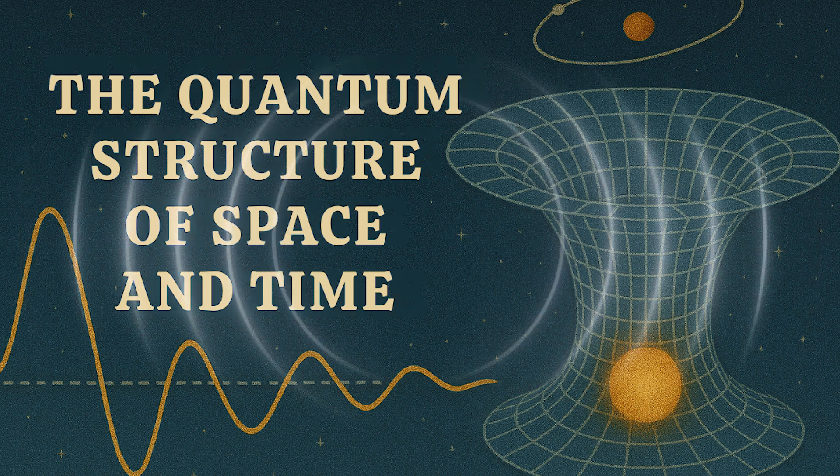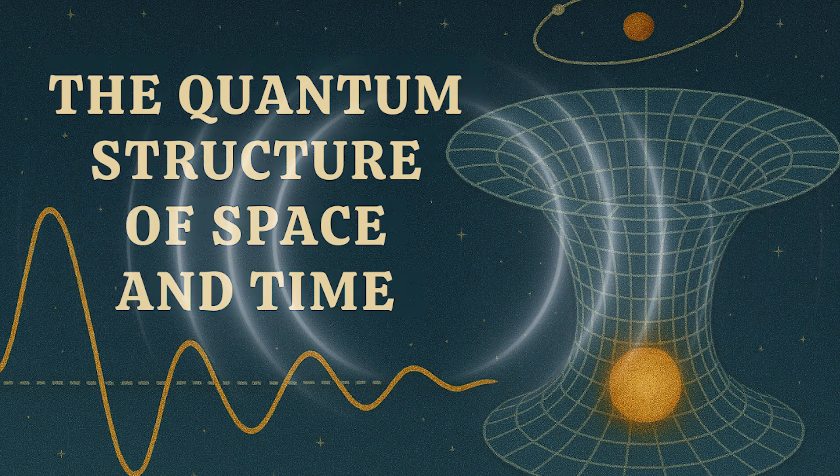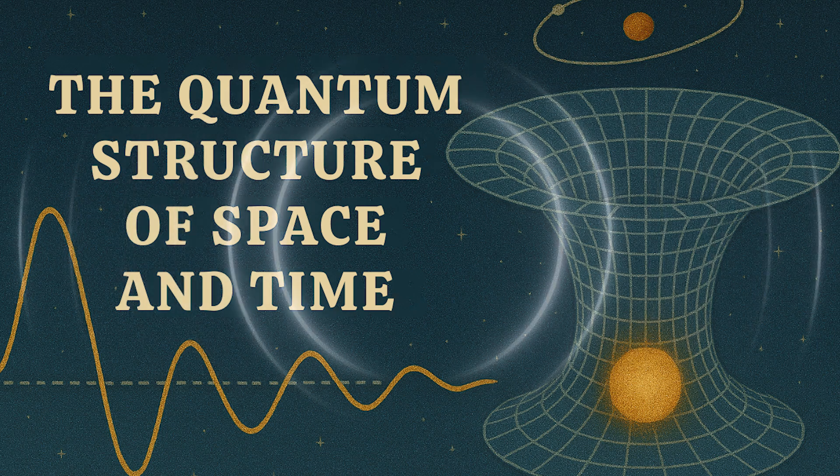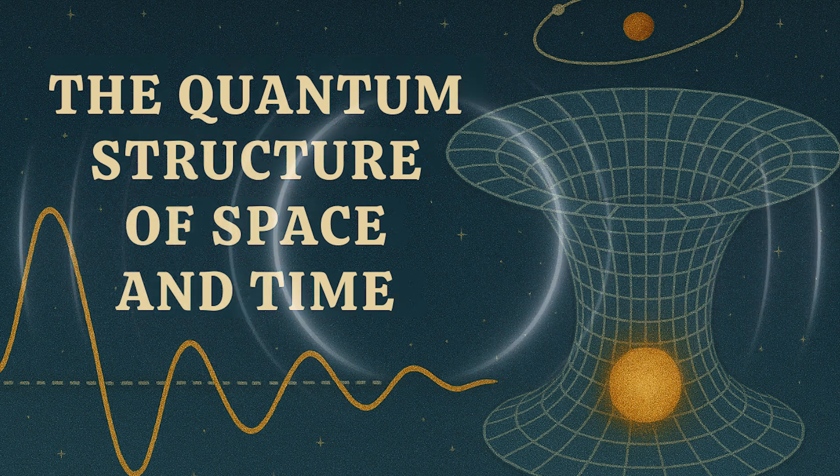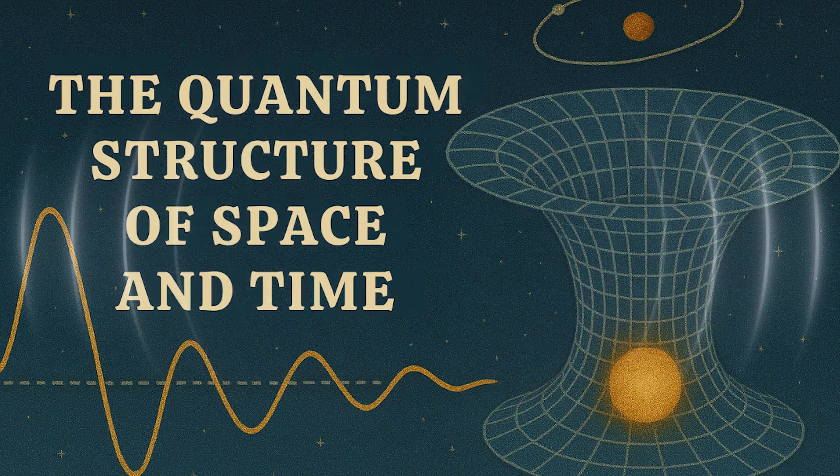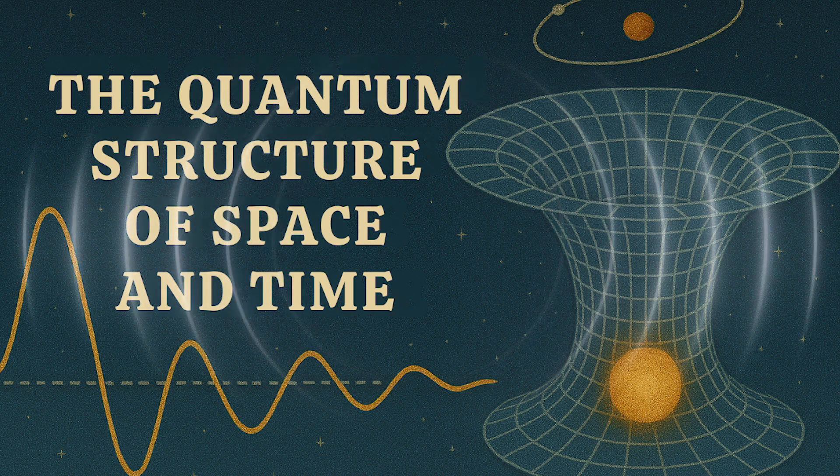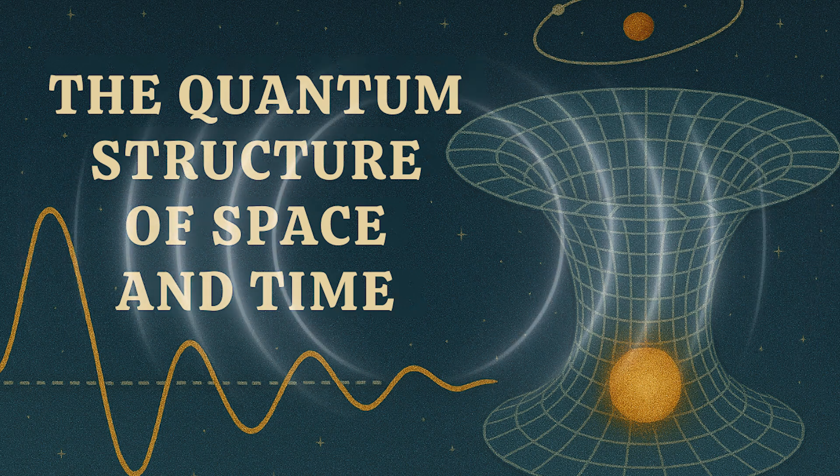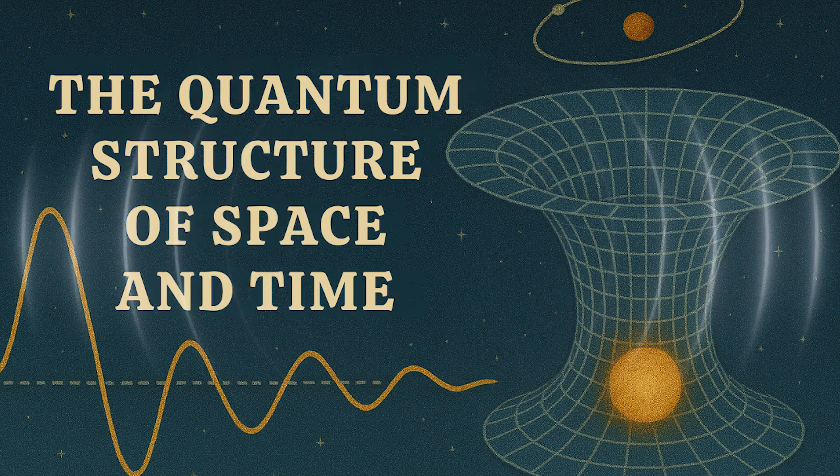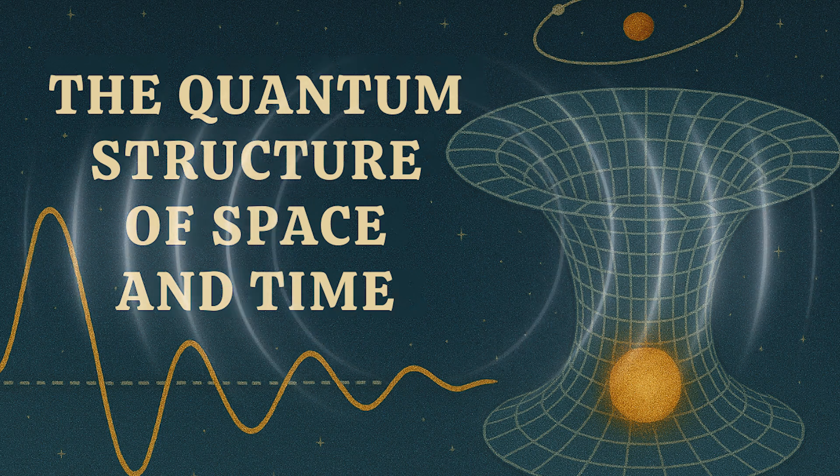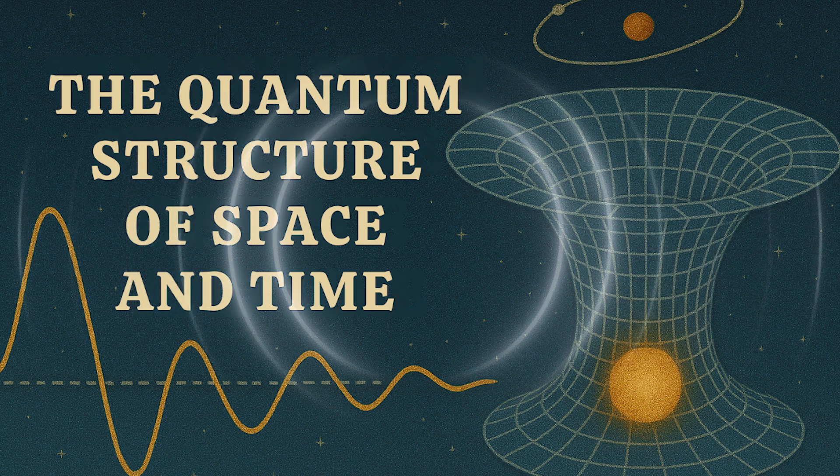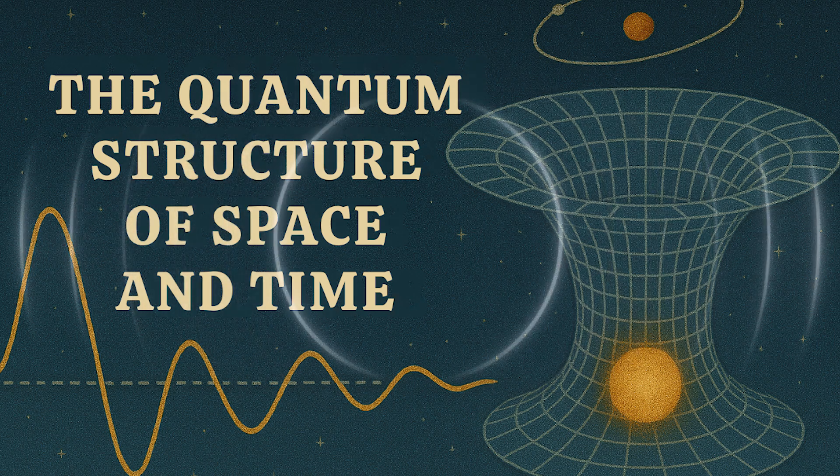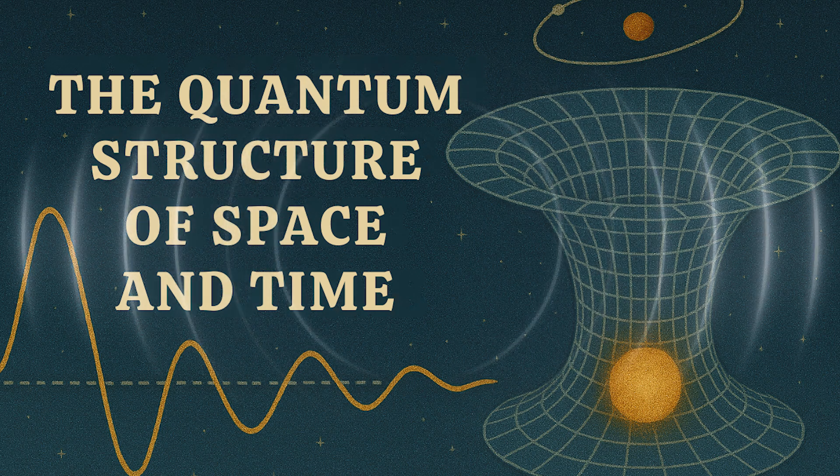That they bubble up from some deeper level of reality that doesn't necessarily have space and time built in from the start. It was a huge theme at the conference. Emergent spacetime. Let's try to break that down. So the basic problem is quantum mechanics for the small stuff, general relativity for gravity and the big picture. And they clash hard. Right. Quantum mechanics is all about probabilities, fuzziness, discrete packets of energy. General relativity is smooth spacetime, geometry, determinism.